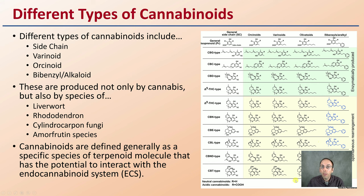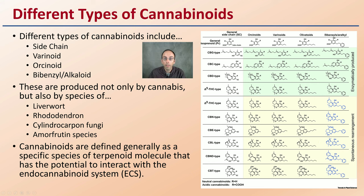Realize that there are different types of cannabinoids, and a lot of people get hung up on just one or two that they like to focus on. Realize there are many types, and there's a whole range of different side chain variations.